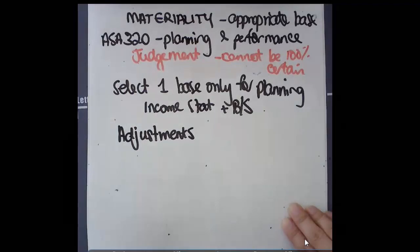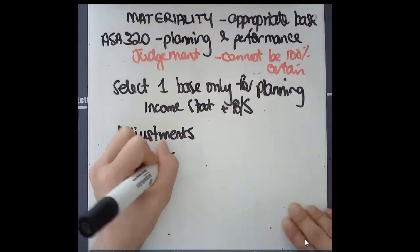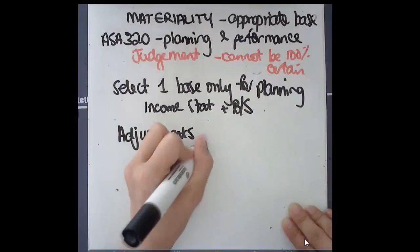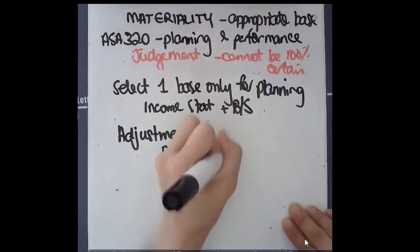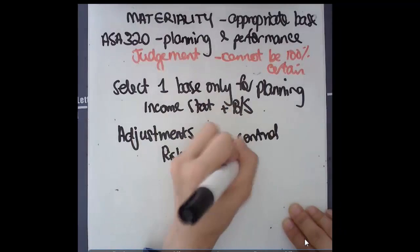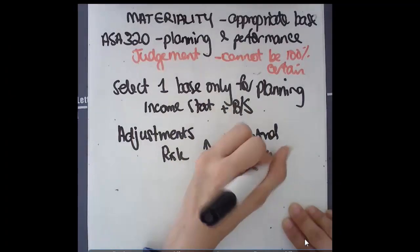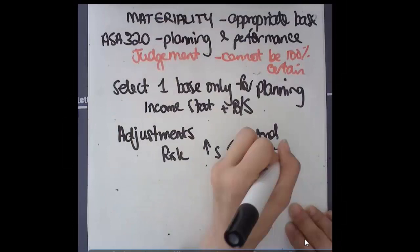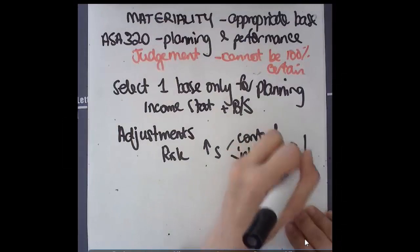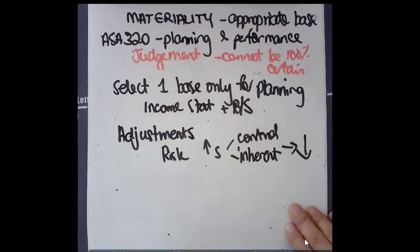If risk increases, either from a control or an inherent perspective based on the information, then materiality needs to decrease. Make sure you have a look at the video that we have on why when risk increases, materiality decreases.